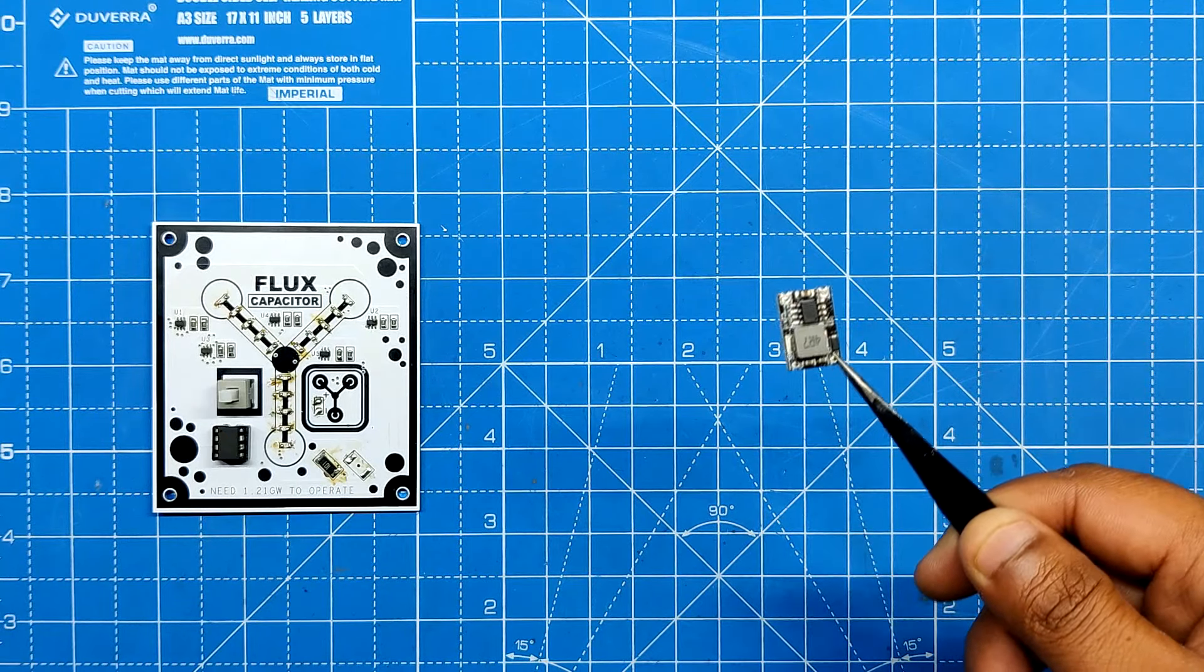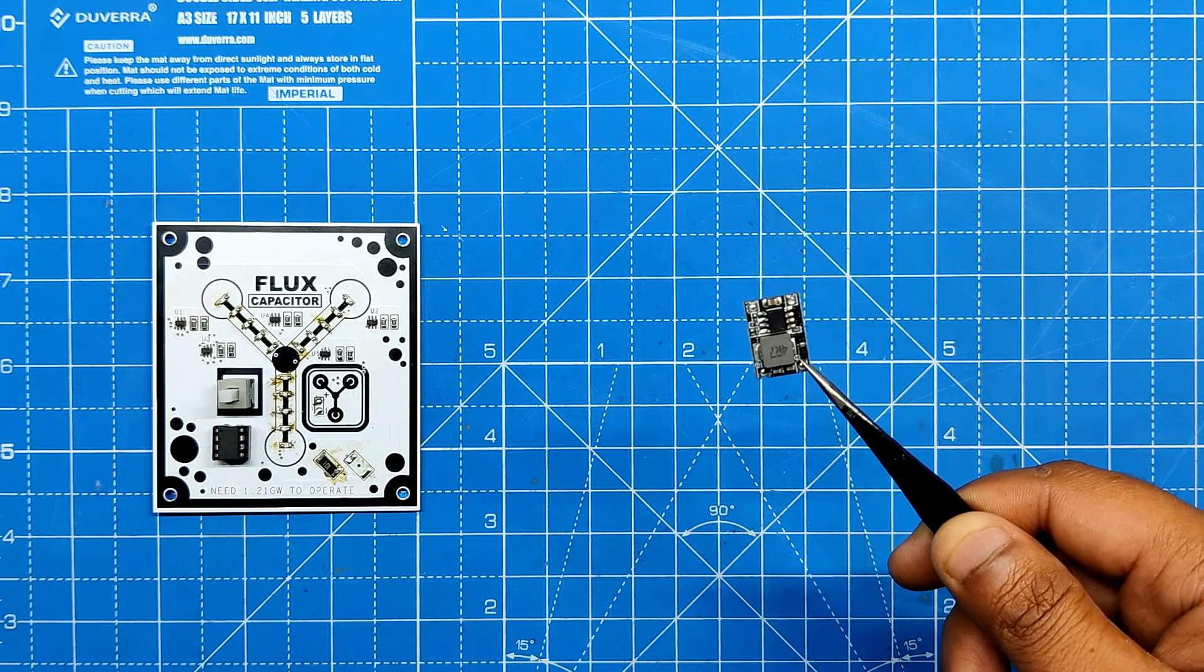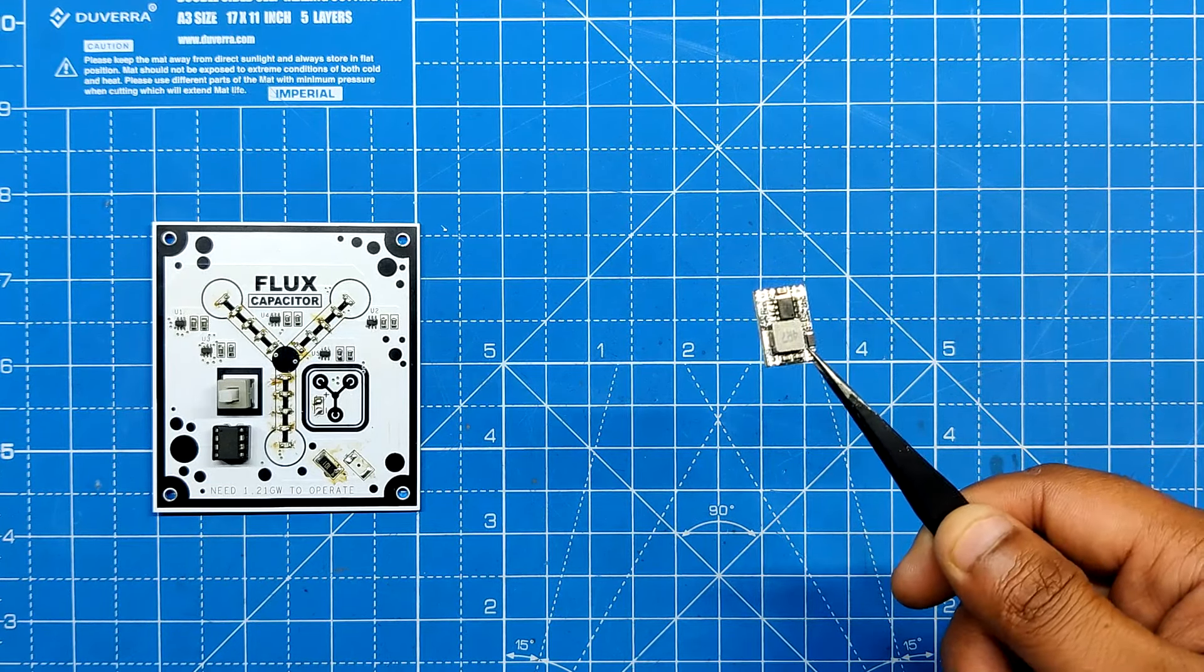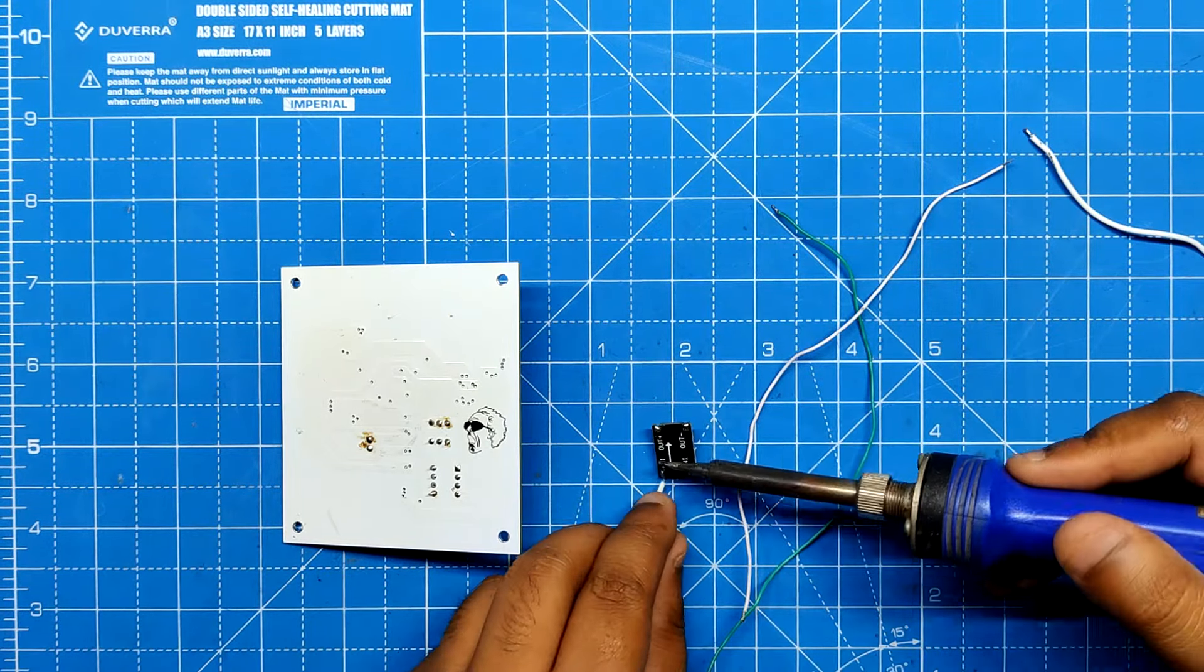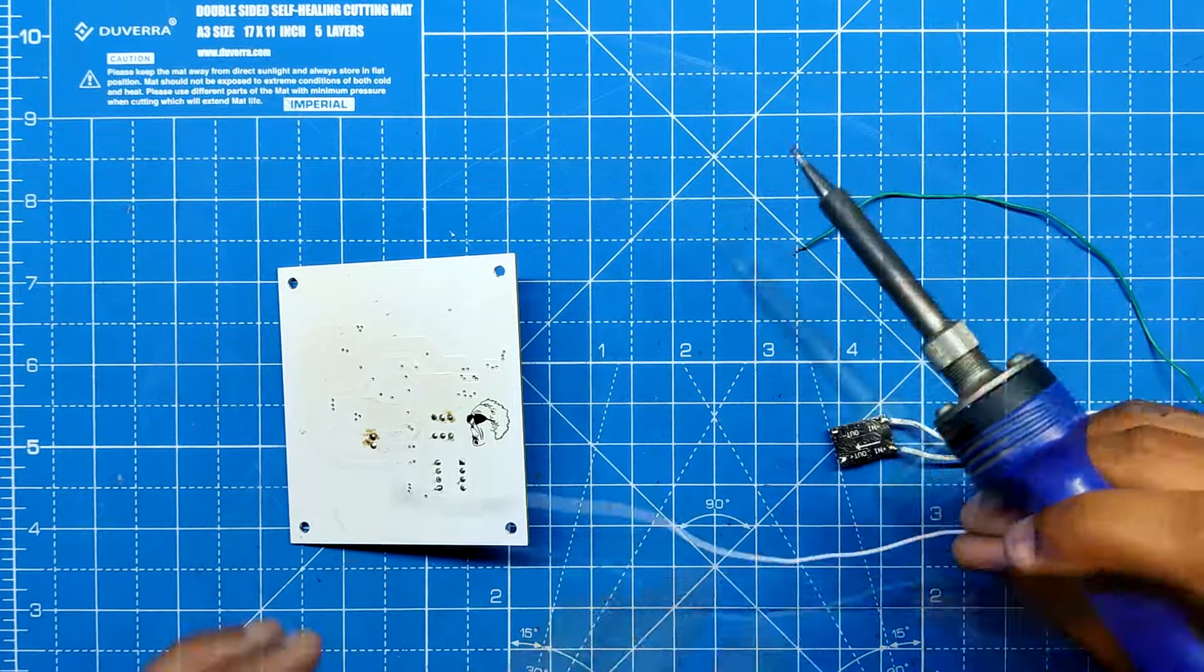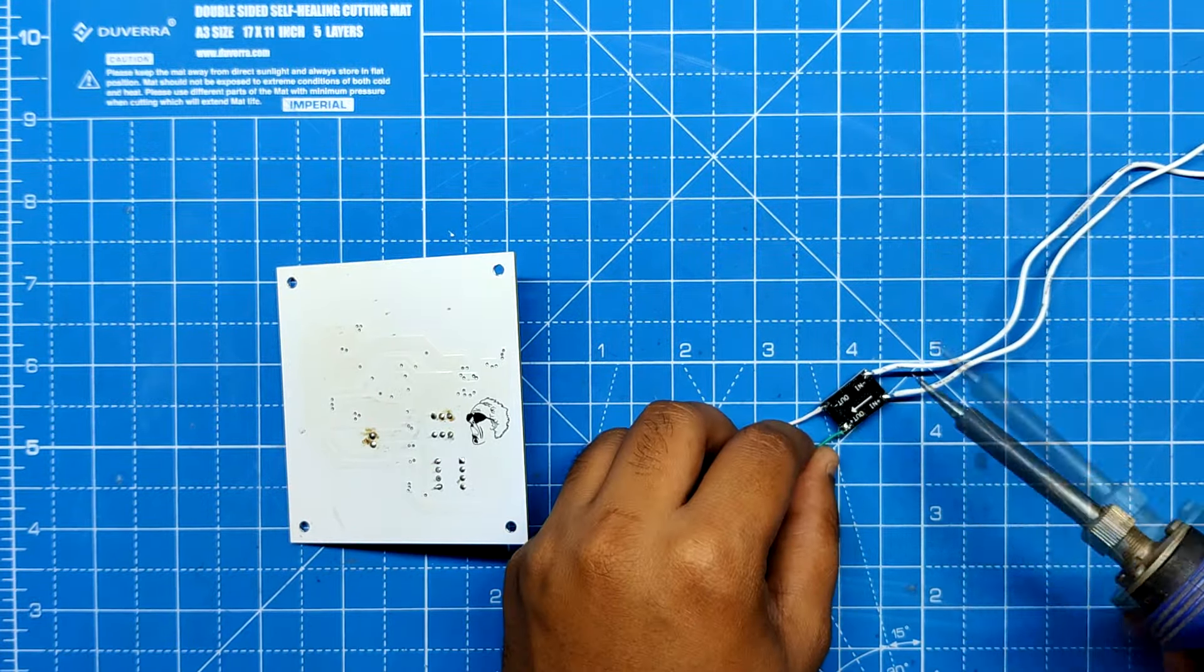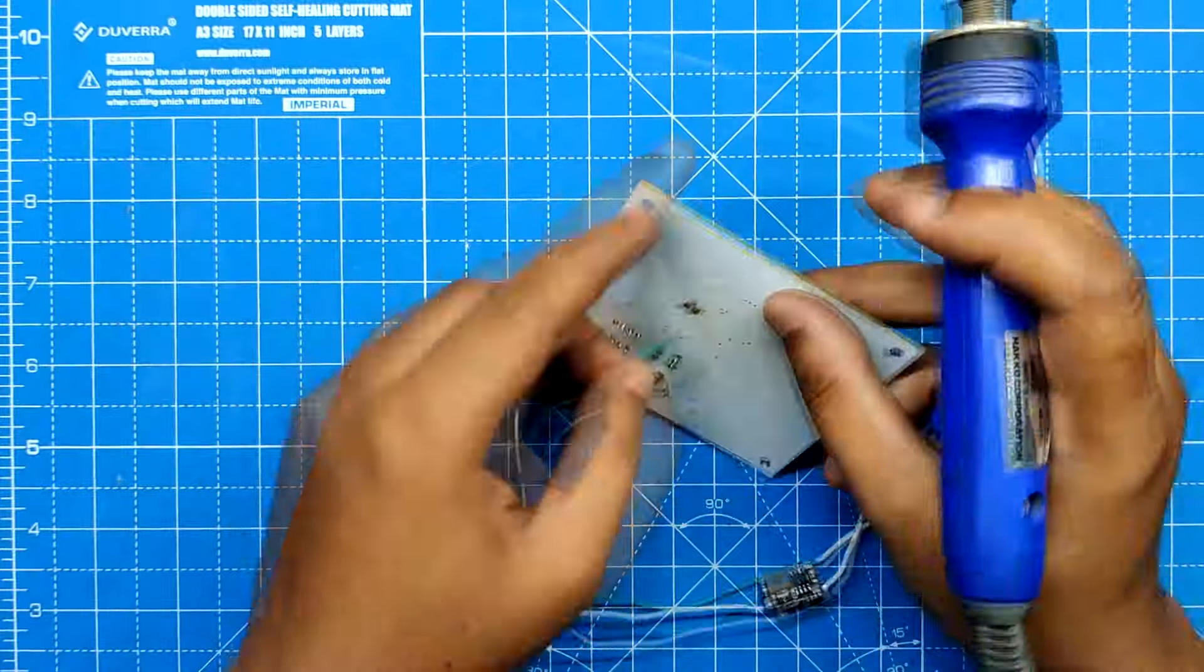We use a DC-DC buck converter module which runs at 7 to 26 volt and can provide a constant output of 5 volt to power the flux capacitor. Here we connected the DC-DC buck converter's output wires to the VCC and ground of the flux capacitor board after adding wires for the module's input and output using a soldering iron.